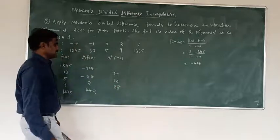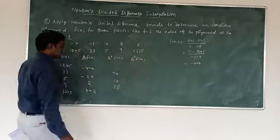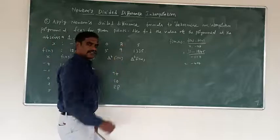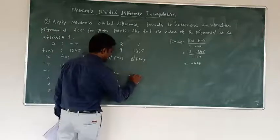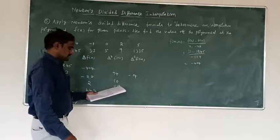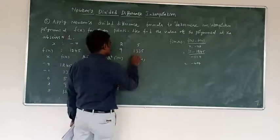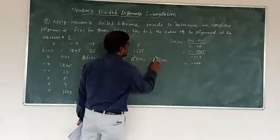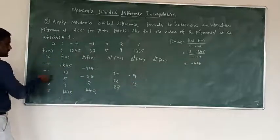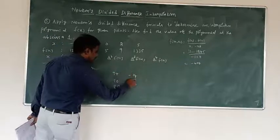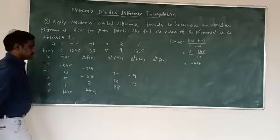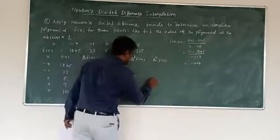Now the third divided difference: the difference between 10 and 94 divided by 2 minus minus 4, simplified, result is minus 14. Again, the difference between 88 and 10 divided by 5 minus minus 1, simplified, result is 13. That is delta cubed. For the fourth divided difference: 13 minus minus 14, which is 13 plus 14, divided by 5 minus minus 4. Simplify to get result 3.